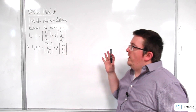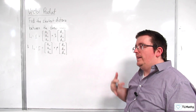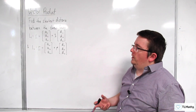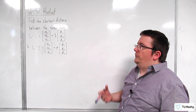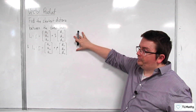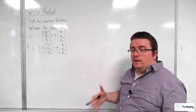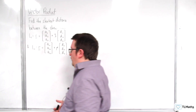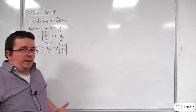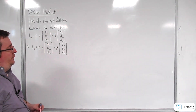In this video, we are going to be trying to derive the result that will allow us to find the shortest distance between two skew lines. I'm going to be doing this completely from general two lines, and hopefully we can get out a nice looking formula that we'll be able to use, rather than going through this whole process. The whole point of this video is to derive that result.